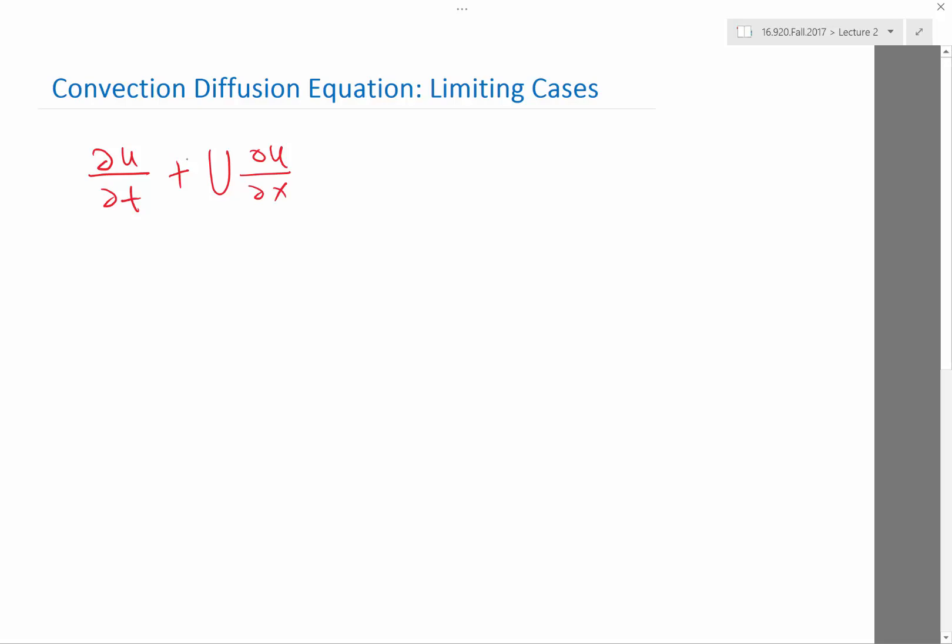The second term we call the advection term: big U times partial U partial X. What does the big U control? It controls whether things move towards the right or towards the left. A positive U moves the solution towards the right, a negative U moves the solution towards the left.